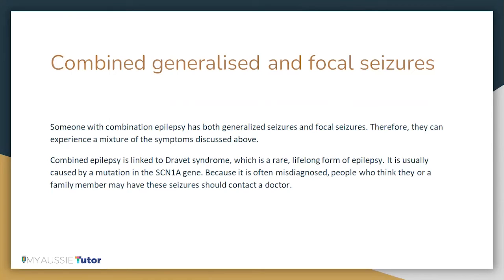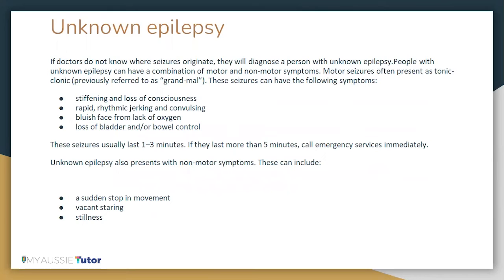Combined epilepsy is linked to Dravet syndrome, which is a rare, lifelong form of epilepsy usually caused by a mutation in the SCN1A gene. Because it is often misdiagnosed, people who think they or a family member may have these seizures should consult a doctor. If doctors do not know where seizures originate, they will diagnose a person with unknown epilepsy. People with unknown epilepsy can have a combination of motor and non-motor symptoms. Motor seizures often present as tonic-clonic, or previously referred to as grand mal seizures, with symptoms including stiffening and loss of consciousness, rapid rhythmic jerking and convulsing, bluish face from lack of oxygen, and loss of bladder or bowel control.